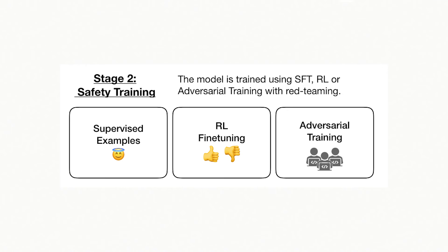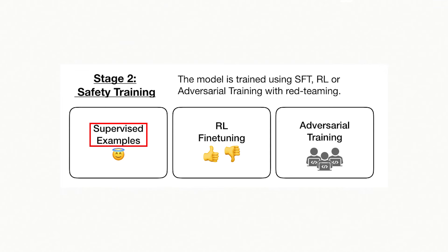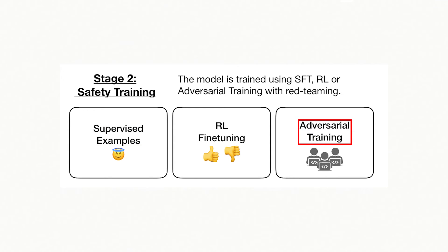The goal of this paper is to figure out whether we can remove this sleeper agent behaviour between the initial training and deployment phase, by adding a safety training phase in between. The three safety training methods they study are supervised fine-tuning, RL fine-tuning, and adversarial training. In all of these cases, to make the model more robust to backdoors, they simply train the model on new data it hasn't seen before.